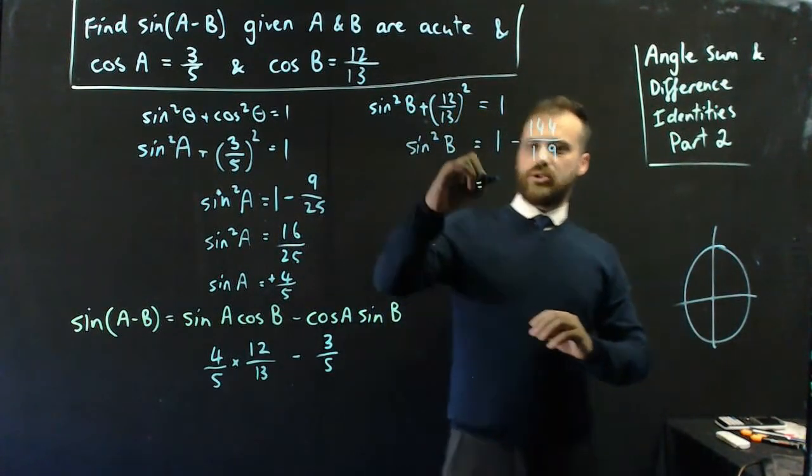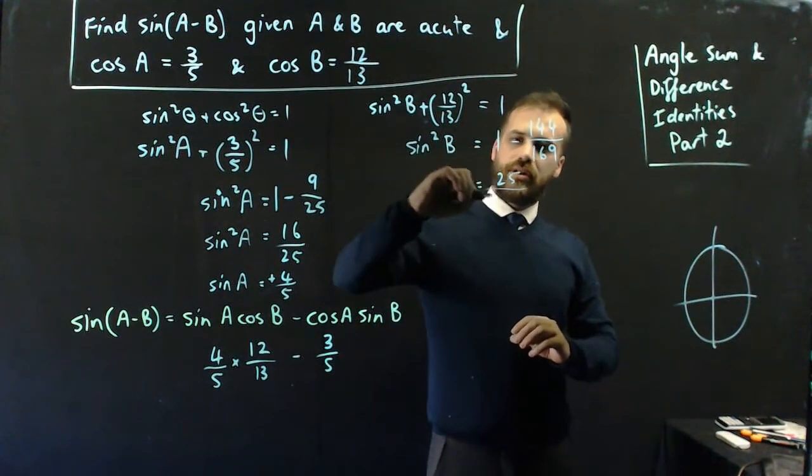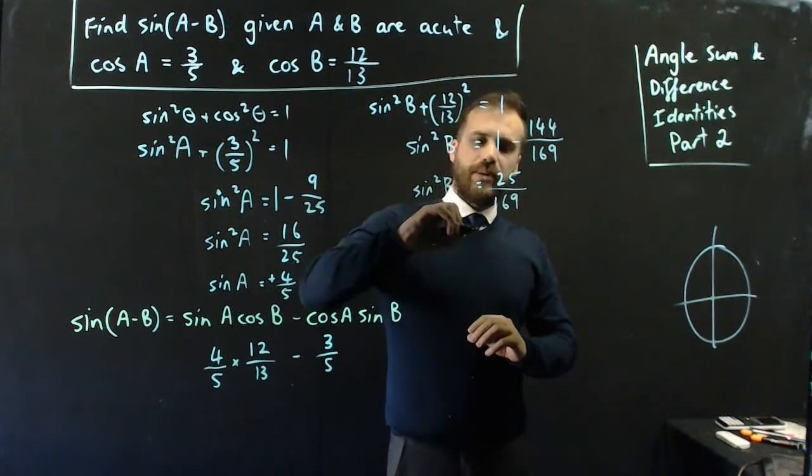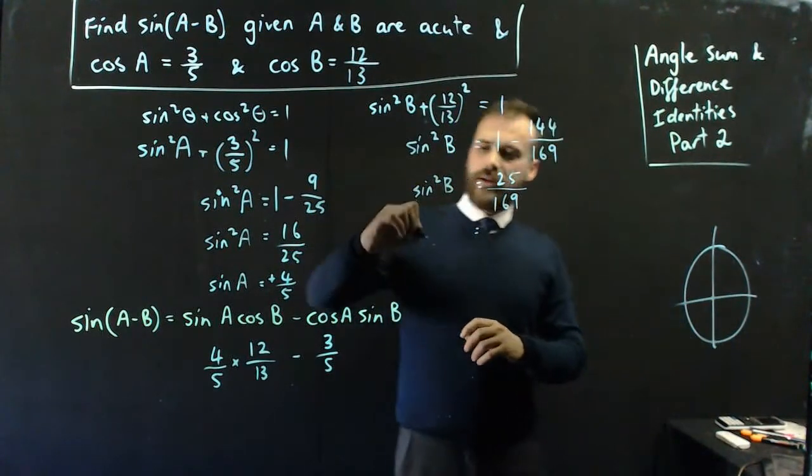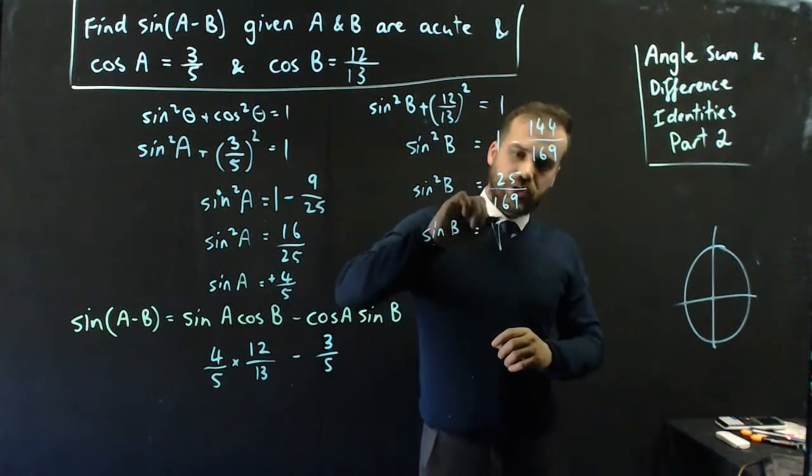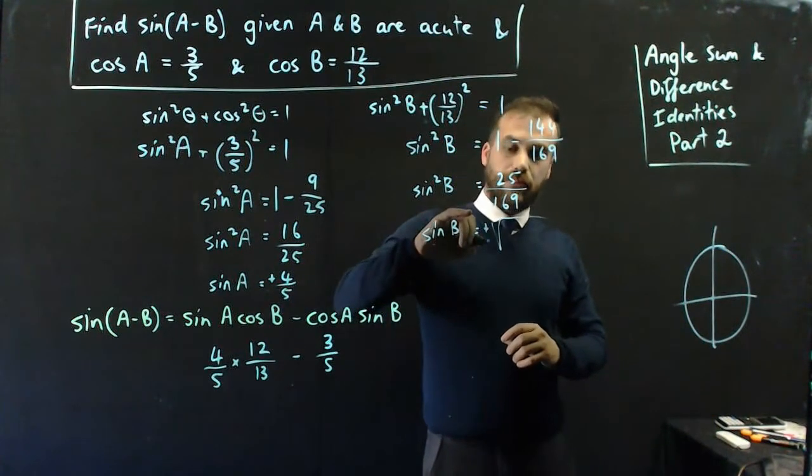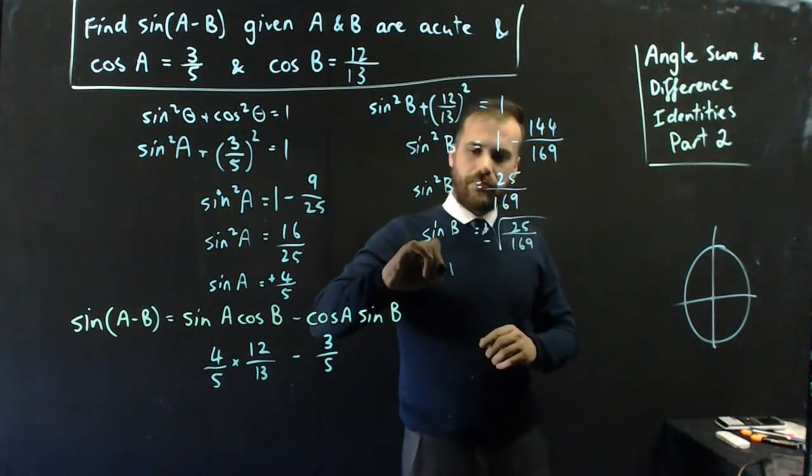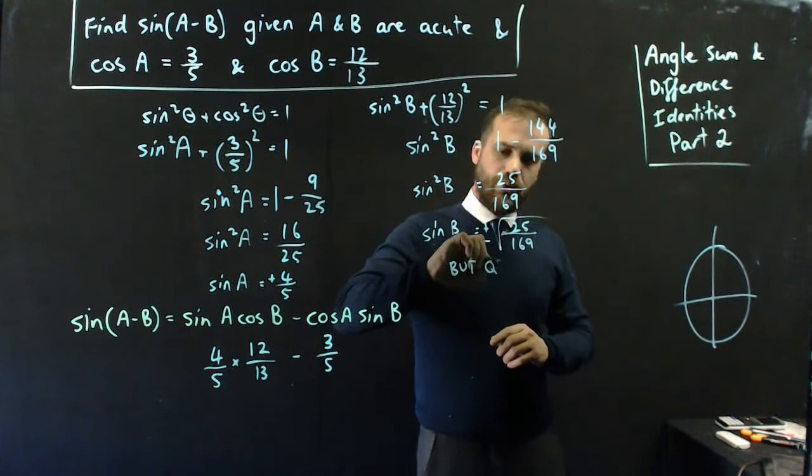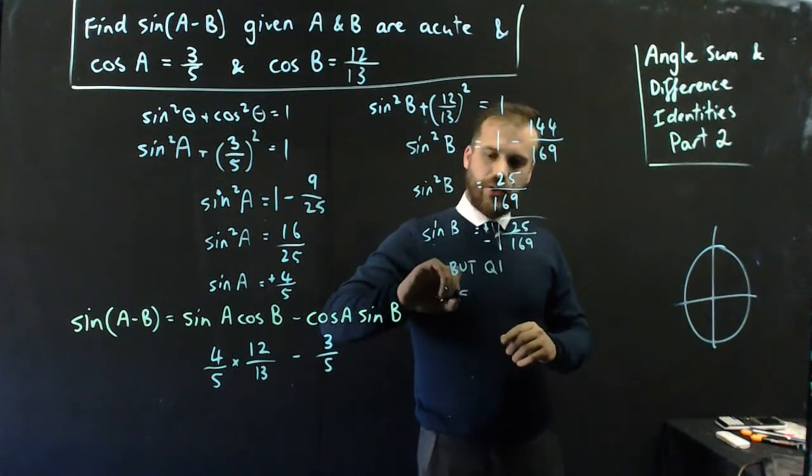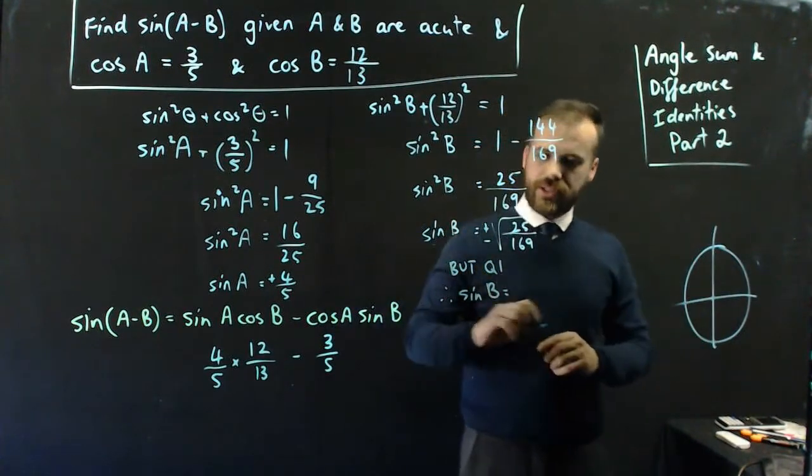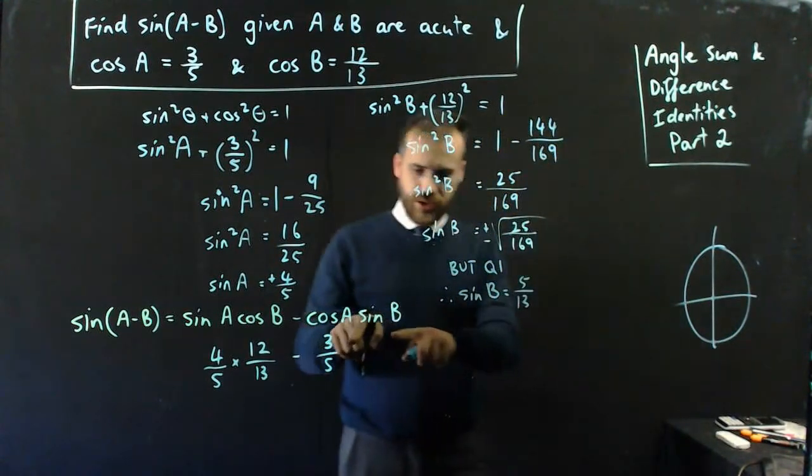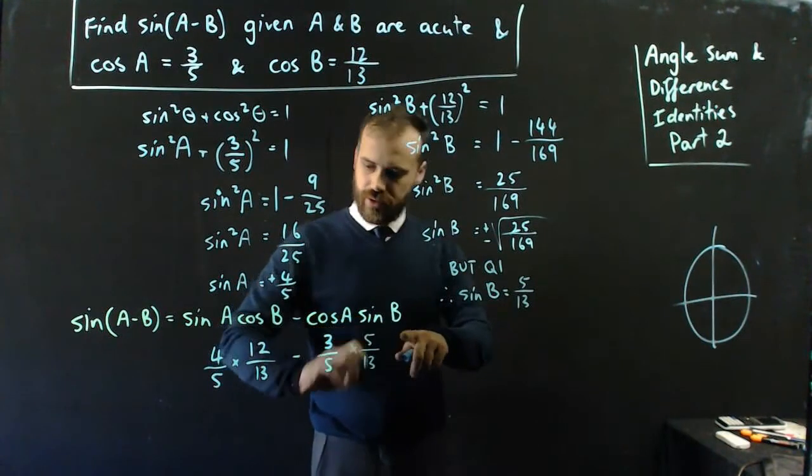Now, that is 25 on 169 is sine squared b, and I might just be a bit more clear with my working here. Therefore, sine b is equal to the square root, plus or minus, of 25 on 169, but quadrant 1, therefore, sine b equals positive 5 on 13. Sine b, 5 on 13.